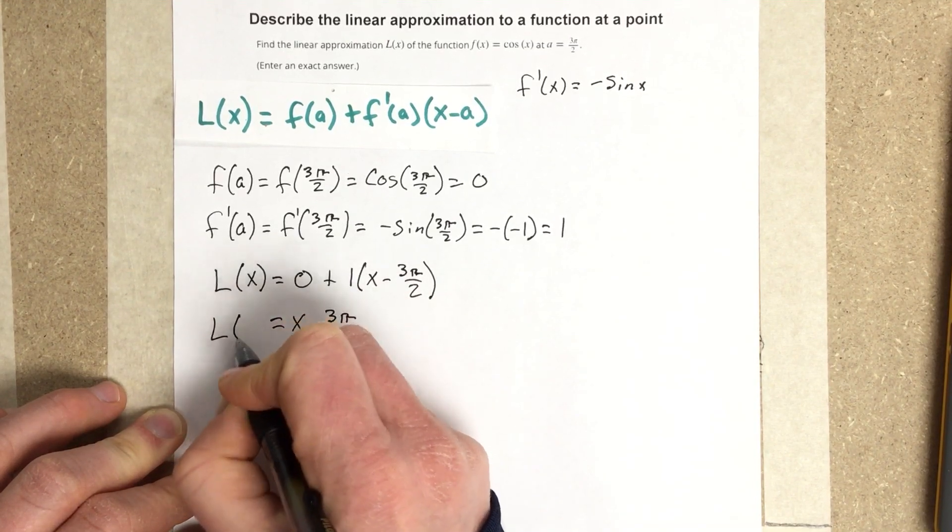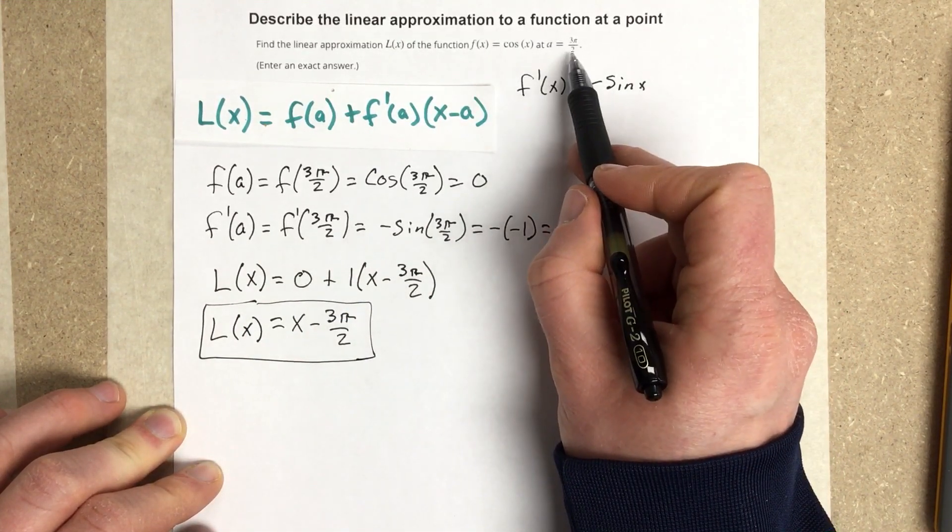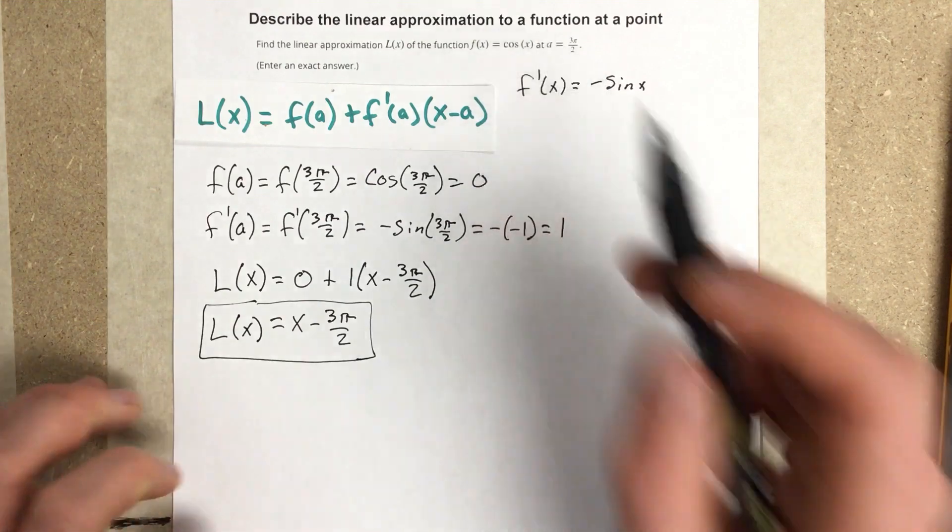And that would be my equation for this linear approximation at a = 3π/2, and f(x) = cos(x). Thank you.